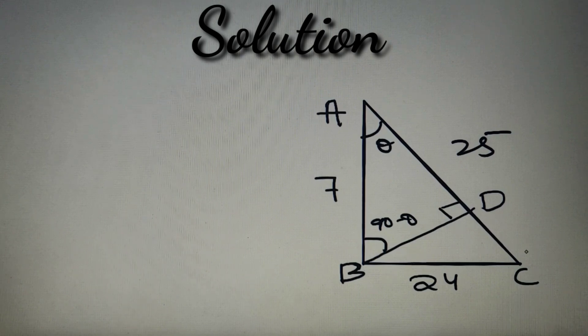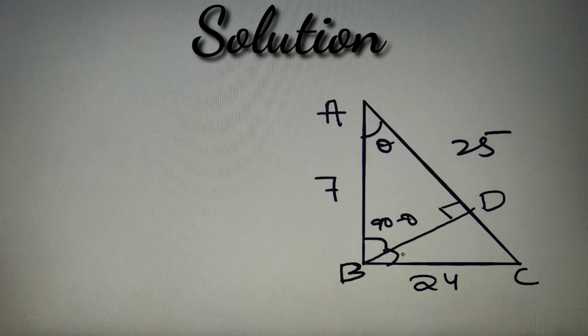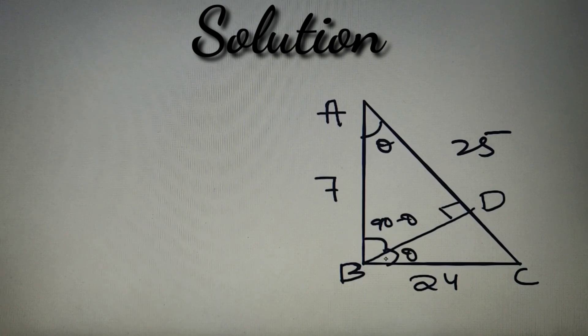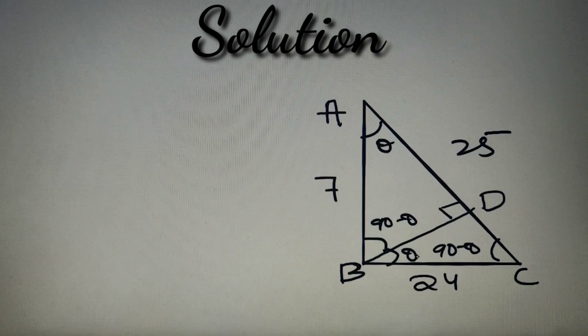In triangle DBC, we have angle B as theta because this complete angle B is equal to 90 degrees. So we have got angle DBC as theta and angle DCB as 90 minus theta, again by using the properties of triangles. If this is theta, then this is 90 minus theta, and this angle is 90 degrees.